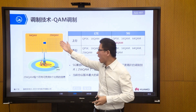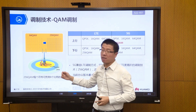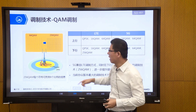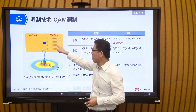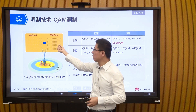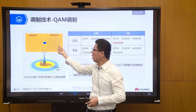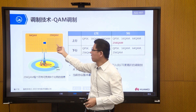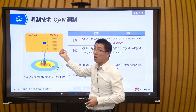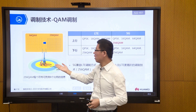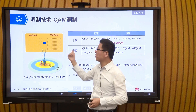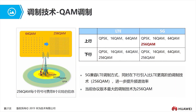Modulation and demodulation is one of the very important basic technologies in wireless communication. In the 4G era, downlink could use QPSK, 16QAM, and 256QAM was defined but rarely supported by terminals. Uplink supported only QPSK, 16QAM, and 64QAM. For example, with 64QAM, one symbol can carry 6 bits of information; with QPSK, only 2 bits; and with 256QAM, 8 bits per symbol.